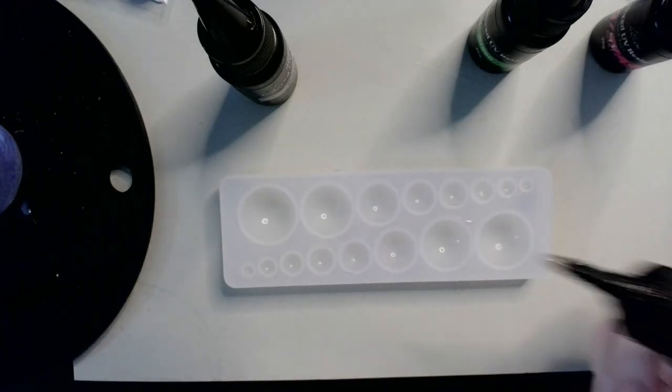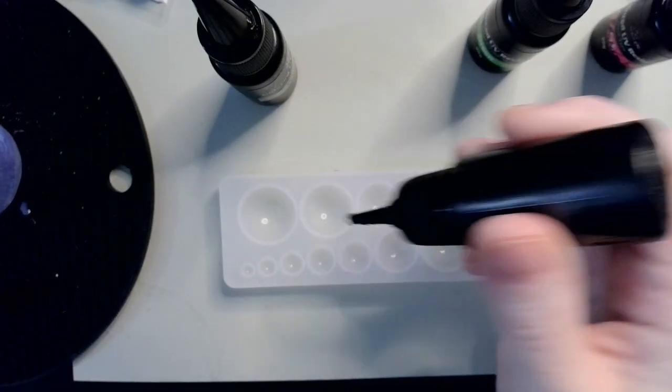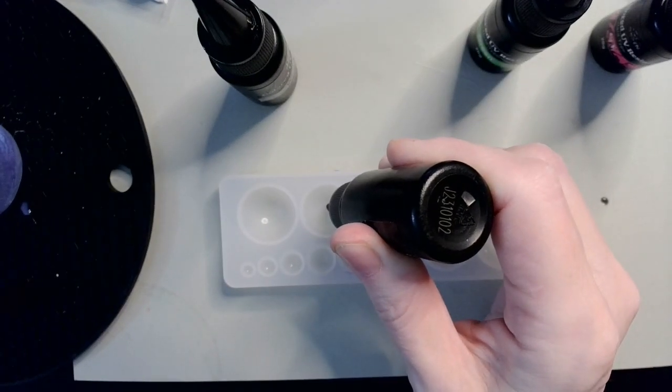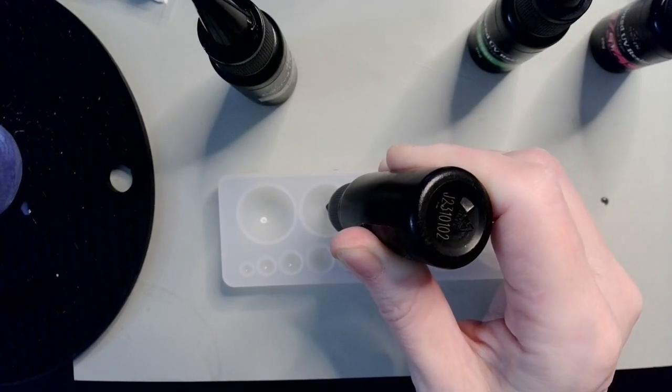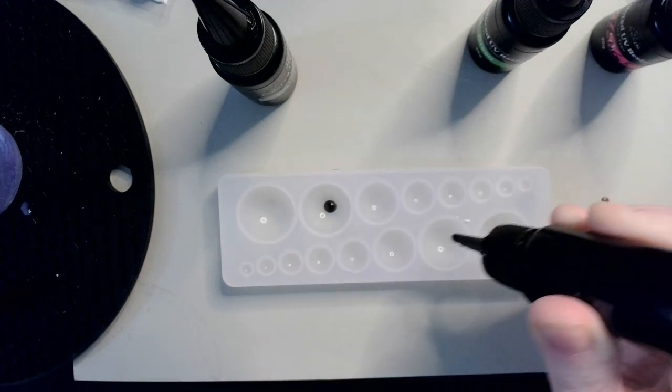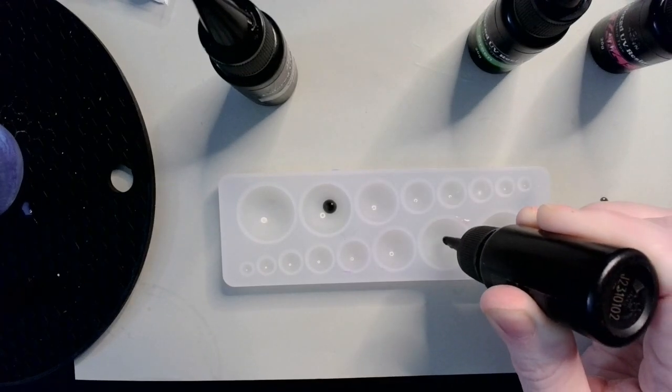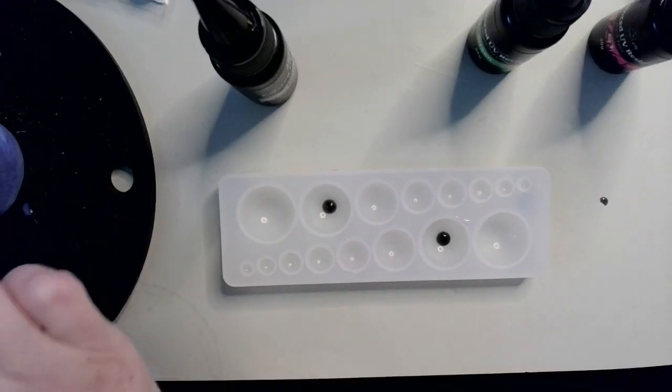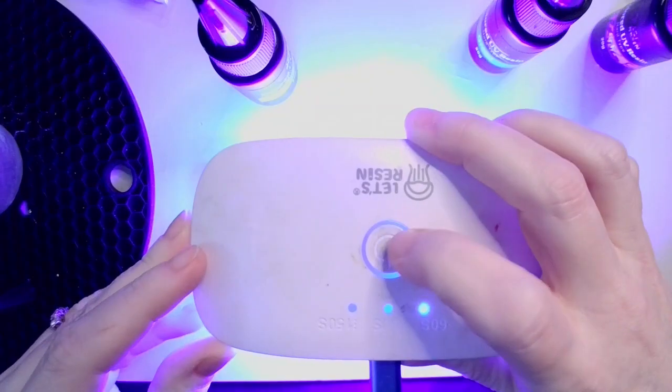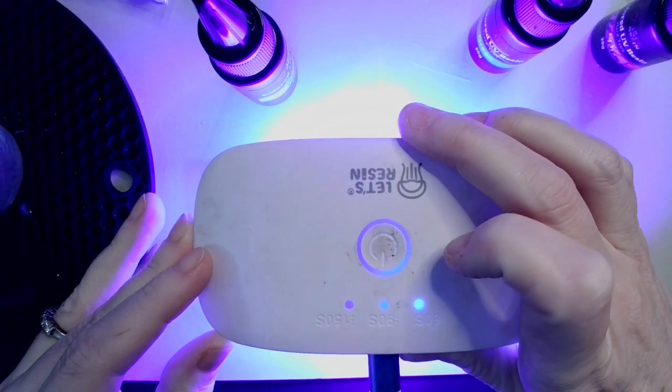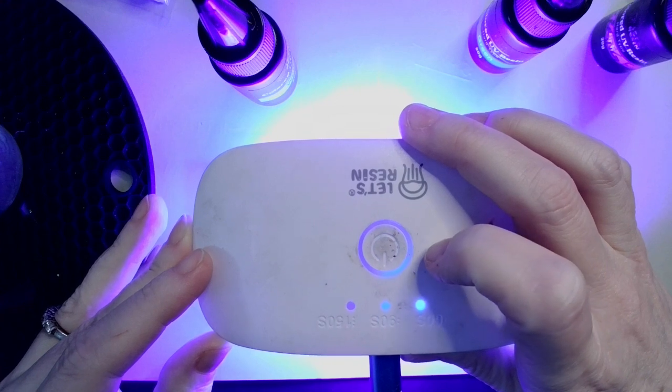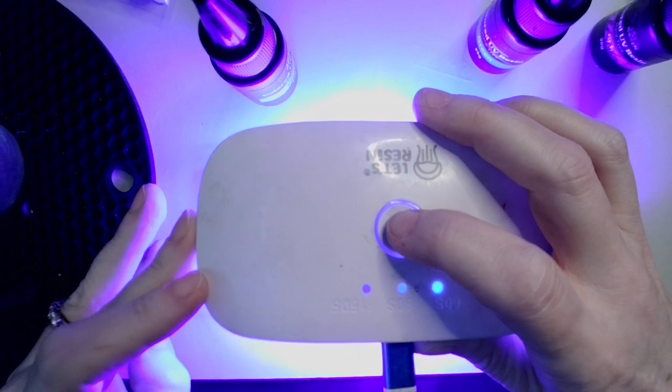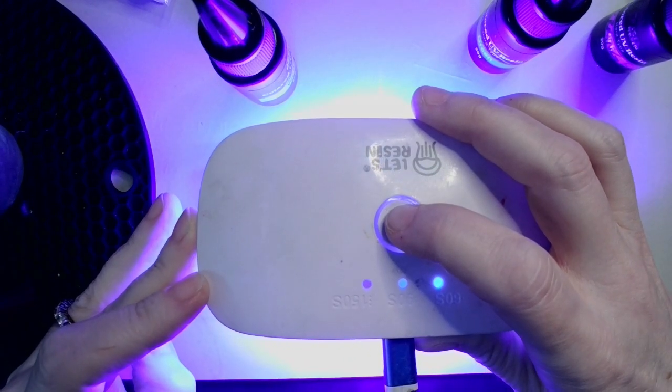With this old faithful, I'm starting with the black and I'm going to be making the pupils. I'll just put a little tiny bit at the bottom. I don't get it quite in the middle but that's okay. I'm just going to cure this for about 15-20 seconds or so, just enough to hold it still.